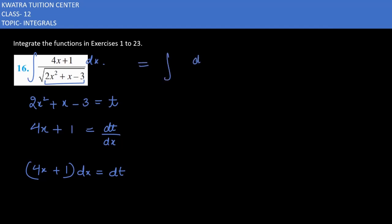So now it will be the integral of dt over root t. And root t means it is t^(1/2). And t^(1/2), if you write in the numerator, then it will be t^(-1/2) dt.